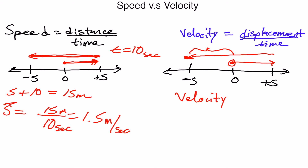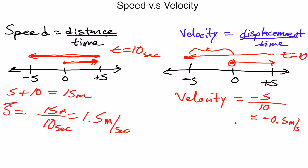So average velocity equals displacement divided by total time. The displacement was negative five, divided by ten seconds, which gives us negative 0.5 meters per second. That is the difference between speed and velocity.